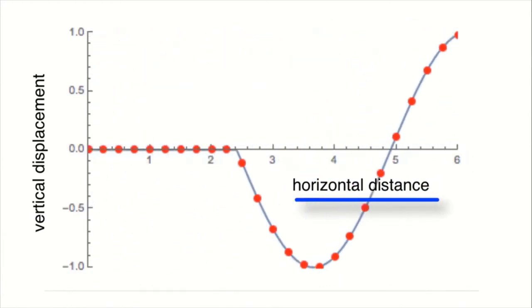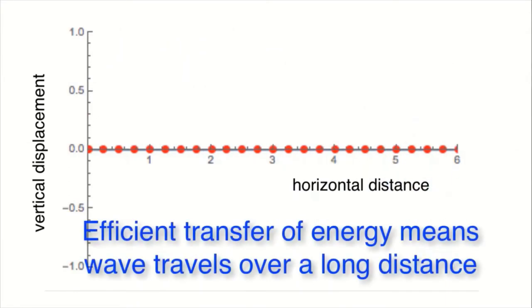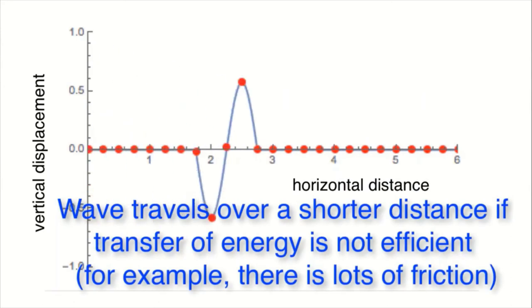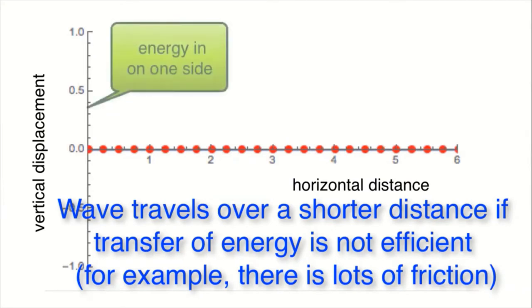If the transfer of energy between particles is efficient, the distance that the pulse travels can be very large. If the transfer of energy is not very efficient, say some of the energy is lost in friction, then the pulse does not propagate very far. The pulse transports energy from one side of the medium to the other.